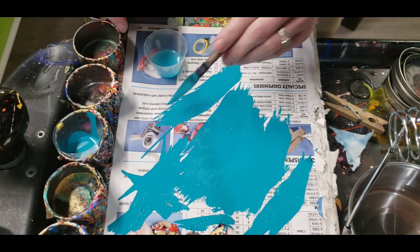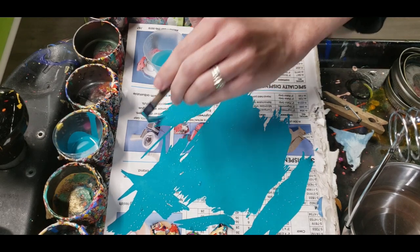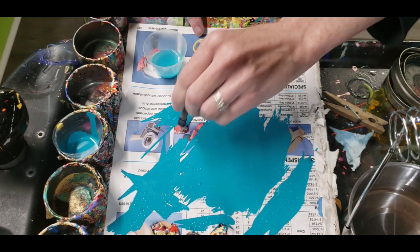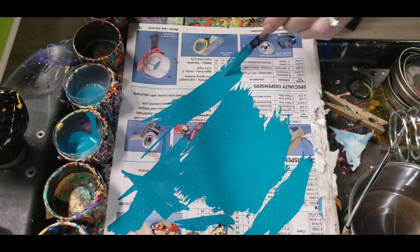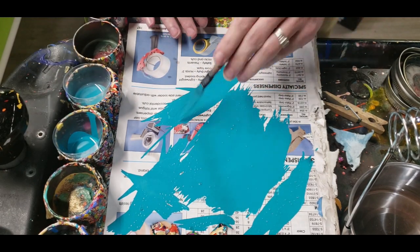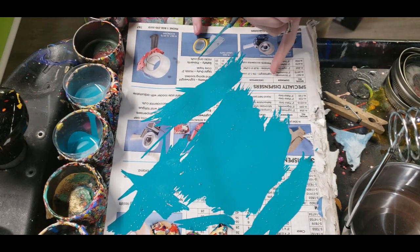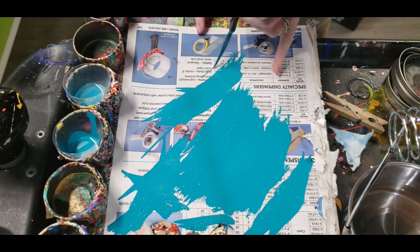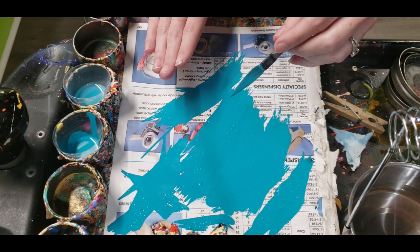I don't put the reducer in the paint. This is how I've done it since I started. And this way you can adjust. Let's say you're going to do a long, long line, you can set up your paint and your reducer to do that. If you really want a skinny, delicate line, you can set up your brush to do that and adjust on your palette.